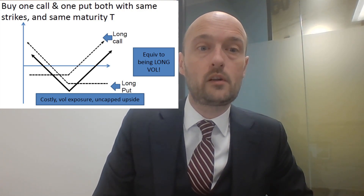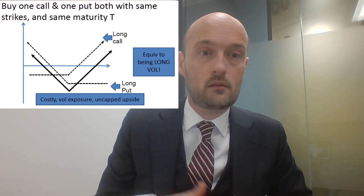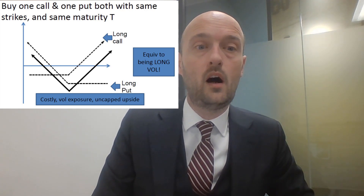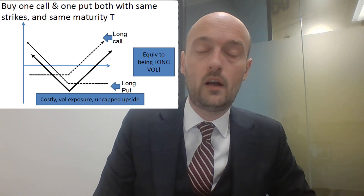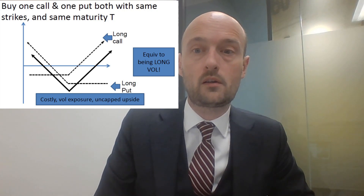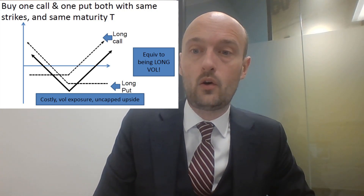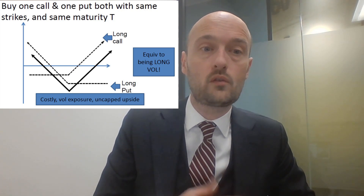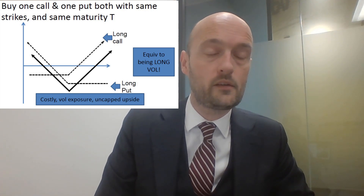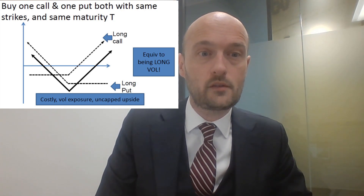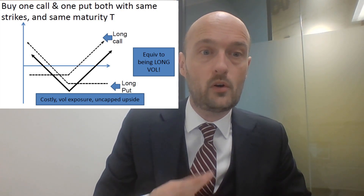So why would someone buy a straddle? The real reason is that they expect the underlying to be extremely volatile — they think it'll move a lot more than the market thinks it will. This is an expensive strategy; you're spending a lot of money on premium and really hoping for quite an explosive move in the price of the underlying. You are long volatility — you're betting on an increase in volatility, because the options are priced with a given level of volatility built in, and you've bought two of them, so you need it to be extra volatile to make money.